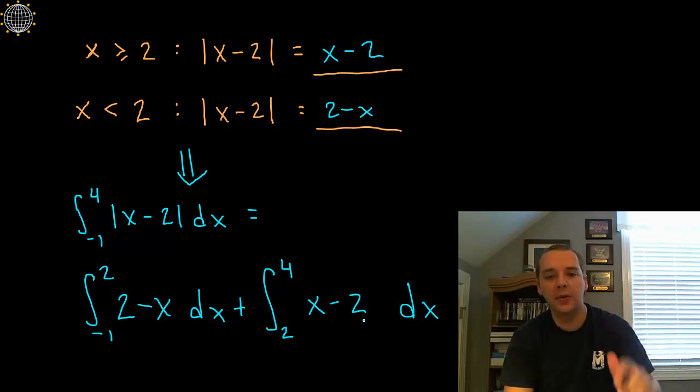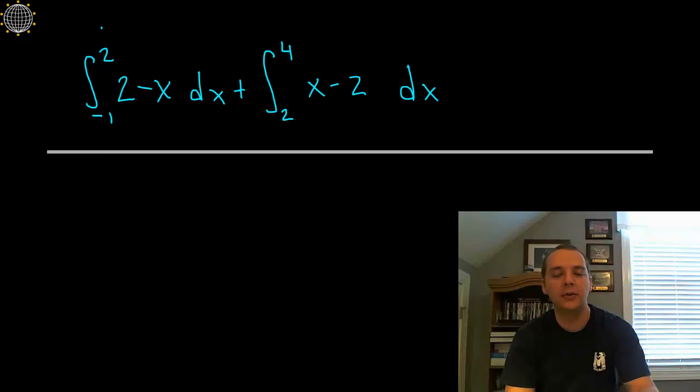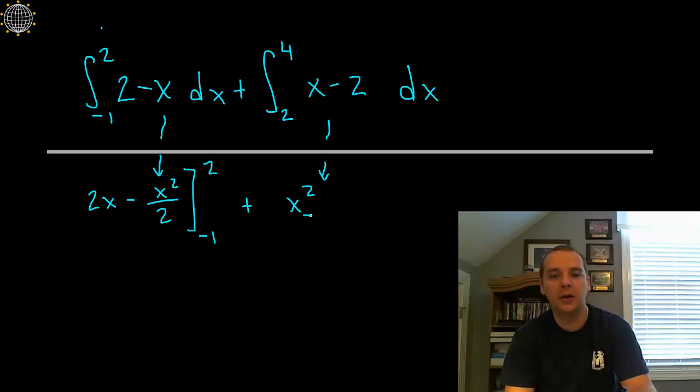Ok, so notice the key thing here, this is the important thing, the absolute value signs are gone now, right? That's the great thing. And so here we can do these integrals independently of one another, and I'll try to run through this algebra as quick as I can. Integral of 2 minus x would be 2x minus x squared over 2, bracket with a minus 1 and a 2. And if we can multitask here, let's go ahead and try to do this one as well. This would be x squared over 2 minus 2x from 2 to 4, ok?